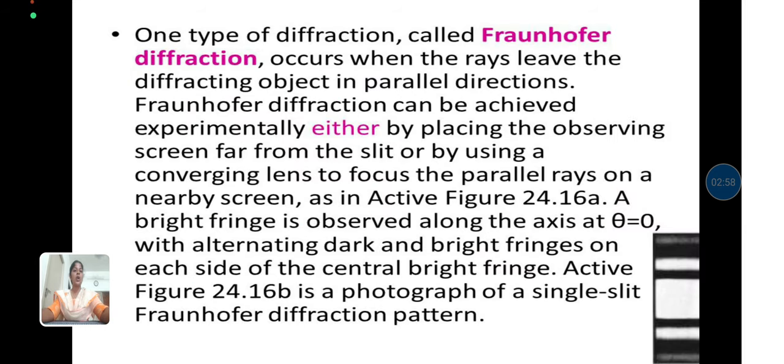One type of diffraction called Fraunhofer diffraction occurs when the rays leave the diffracting object in parallel directions. Fraunhofer diffraction can be achieved experimentally either by placing the observing screen far from the slit or by using a converging lens to focus the parallel rays on a nearby screen.